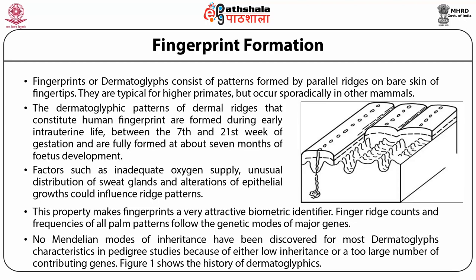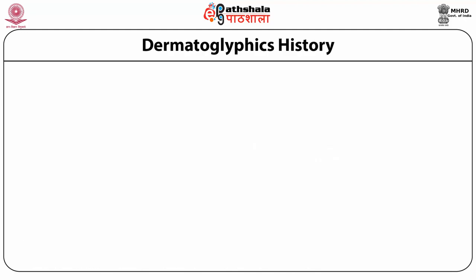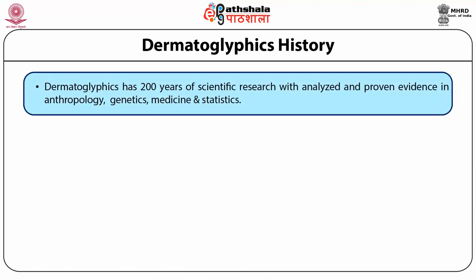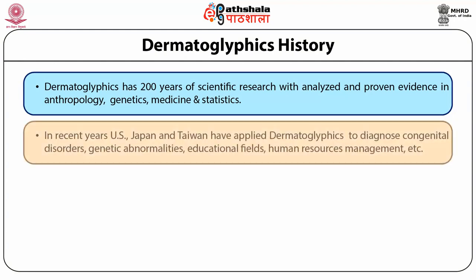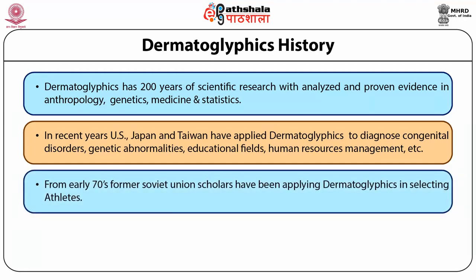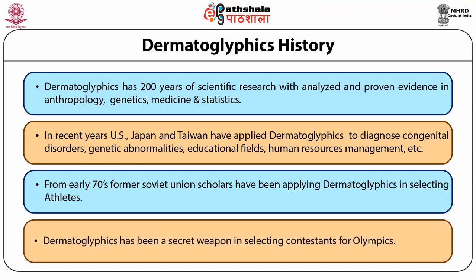Dermatoglyphics has 200 years of scientific research with analyzed and proven evidence in anthropology, genetics, medicine, and statistics. Figure 1 shows the history of dermatoglyphic research. In recent years, the US, Japan, and Taiwan have applied Dermatoglyphics to diagnose congenital disorders, genetic abnormalities, education fields, and human resource management. From the early 1970s, former Soviet Union scholars have been applying Dermatoglyphics in selecting athletes, and it has been used as a strategic tool in selecting contestants for the Olympics.